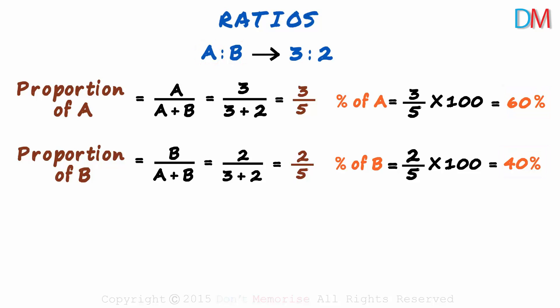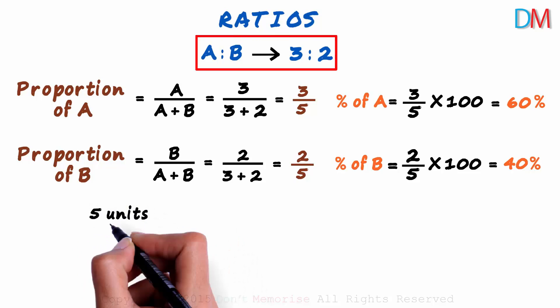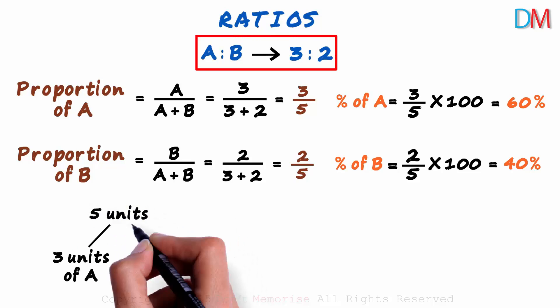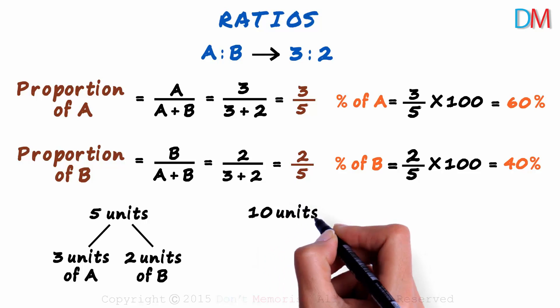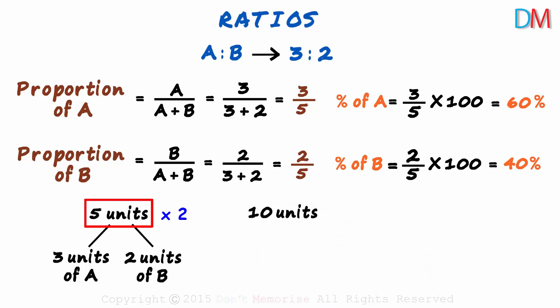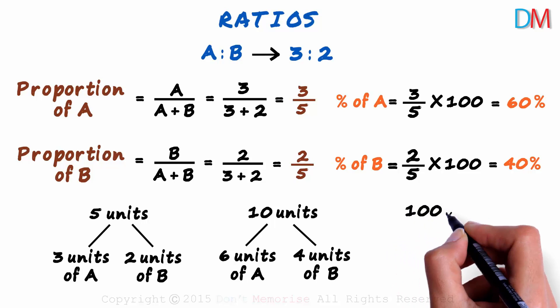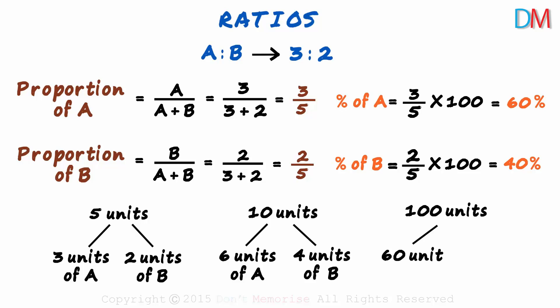So if the mixture has a total of 5 units, this ratio tells us that it will have 3 units of A and 2 units of B. What if the mixture has 10 units in all? The total is multiplied by 2. Hence, each of these quantities is also multiplied by 2. It will have 6 units of A and 4 units of B. And what if the mixture has 100 units? It will have 60 units of A and 40 units of B.